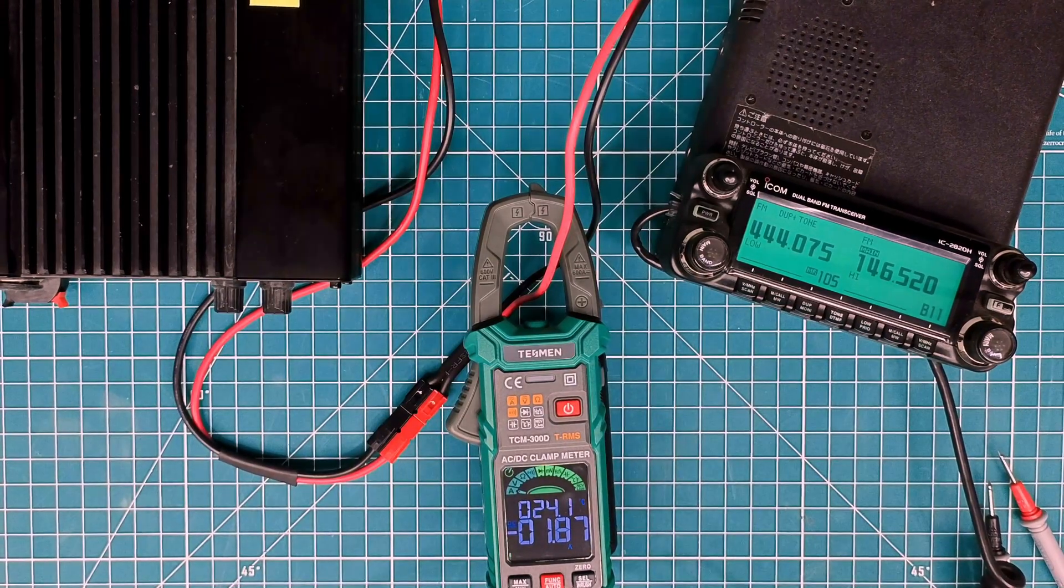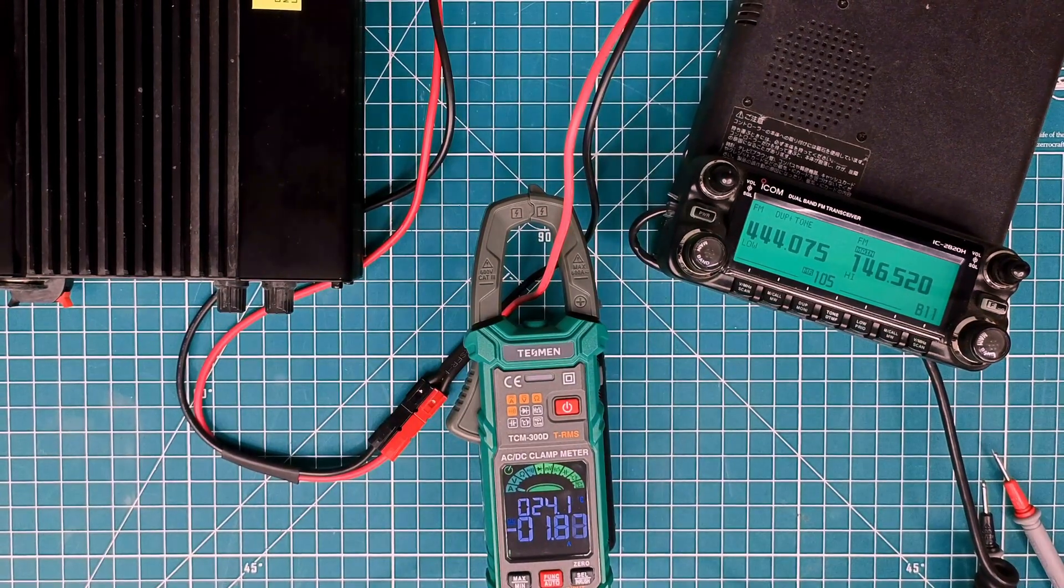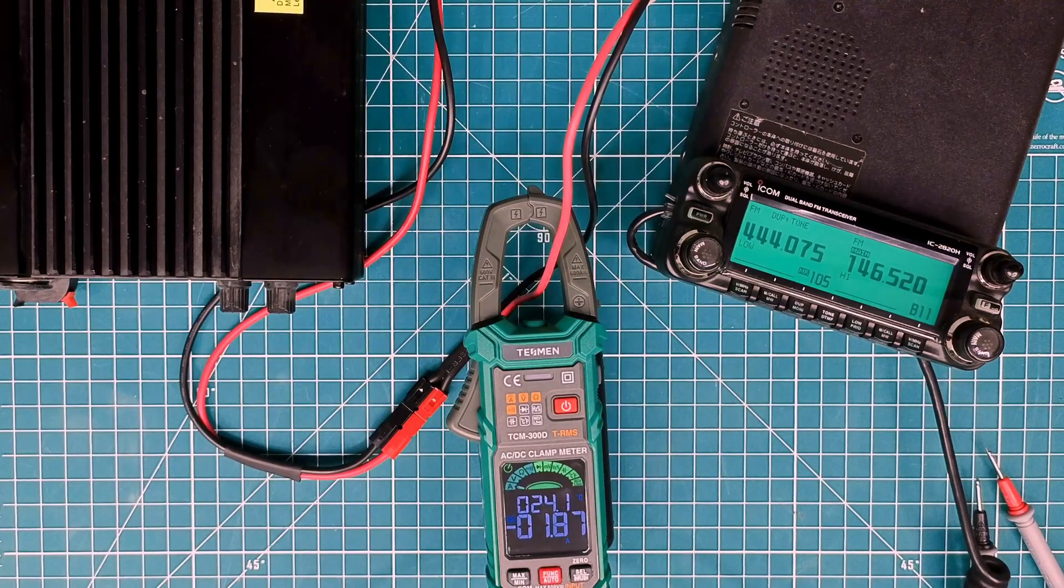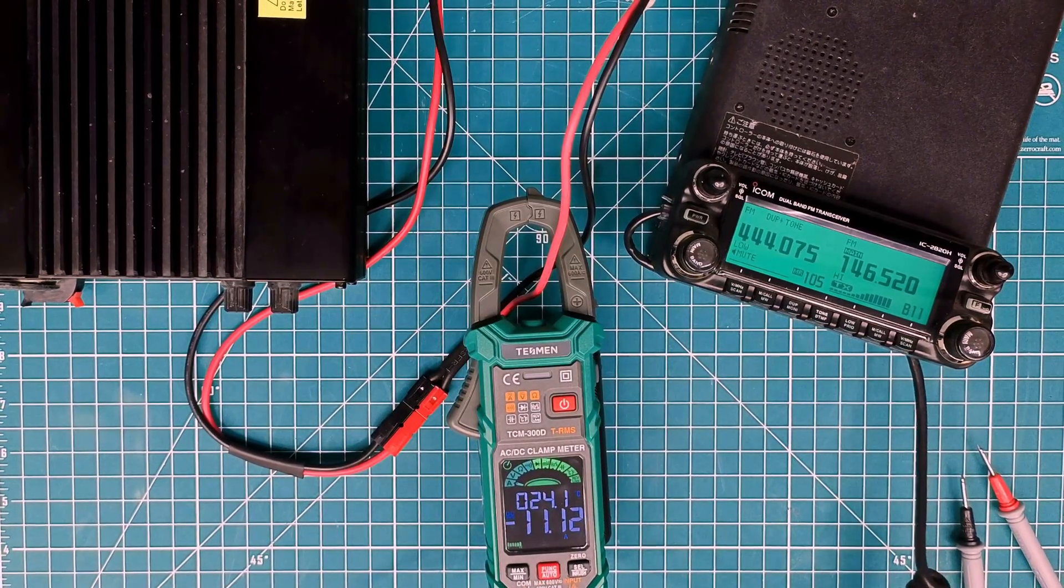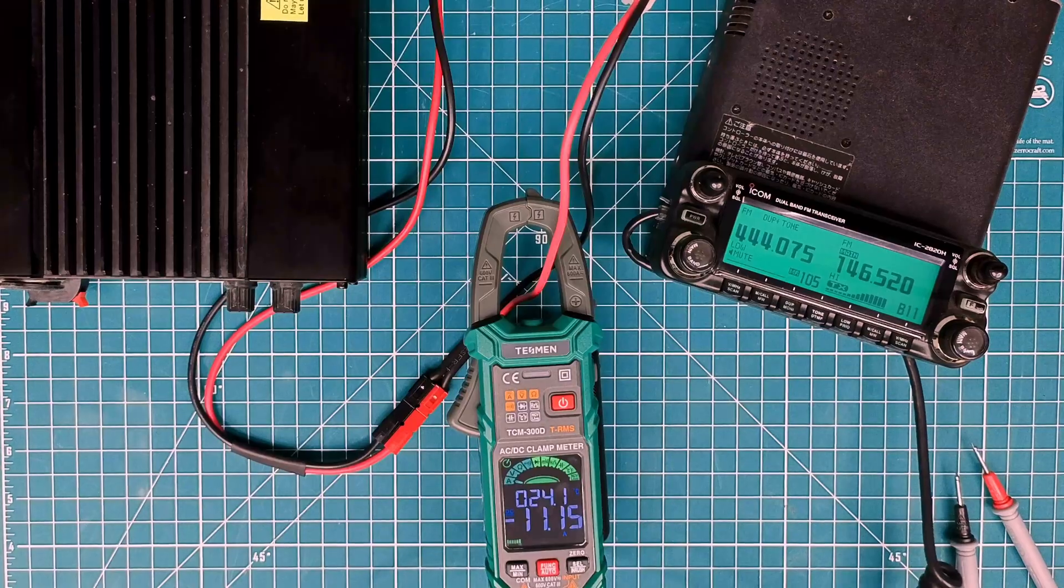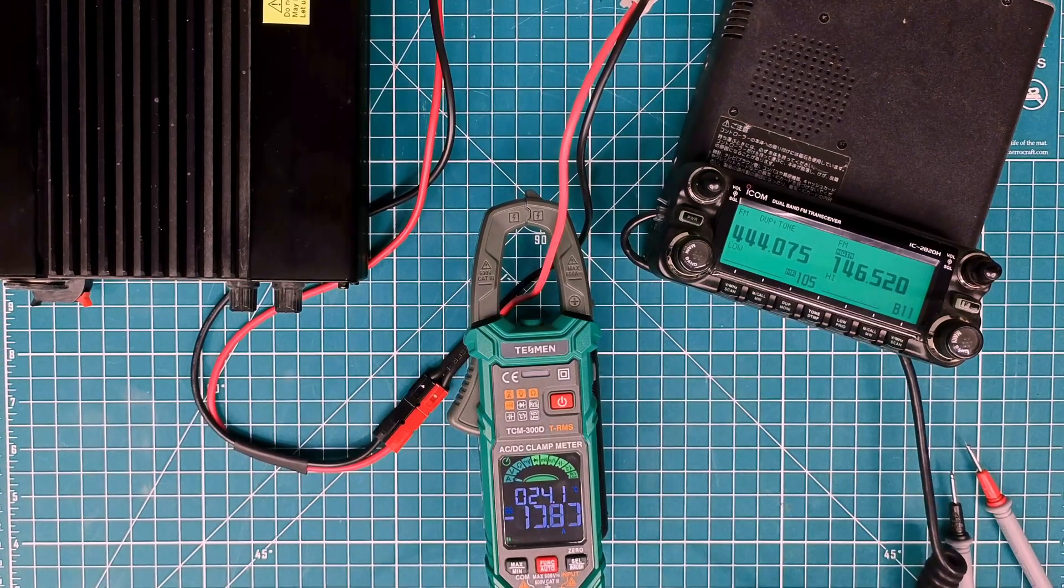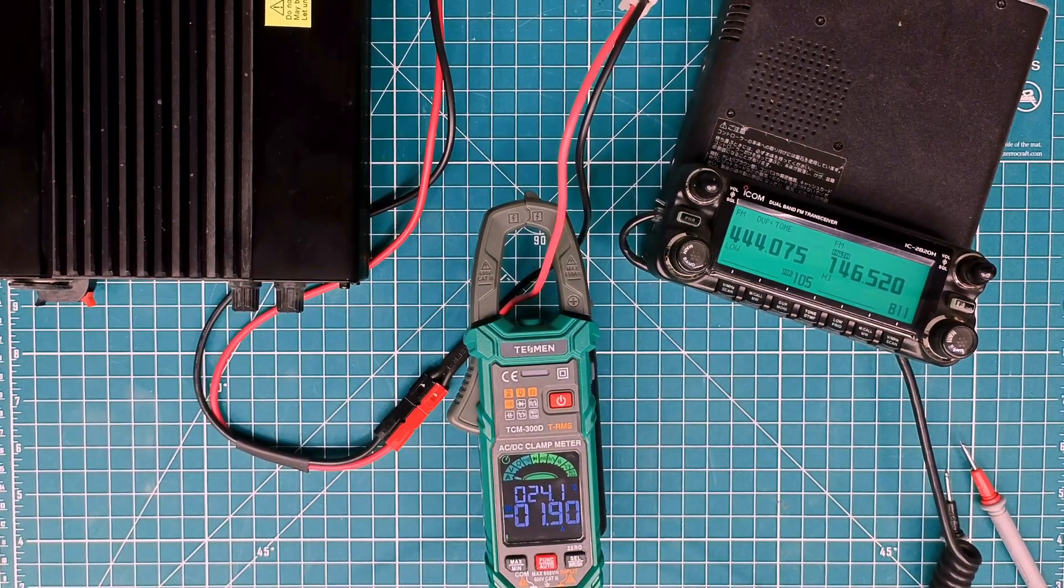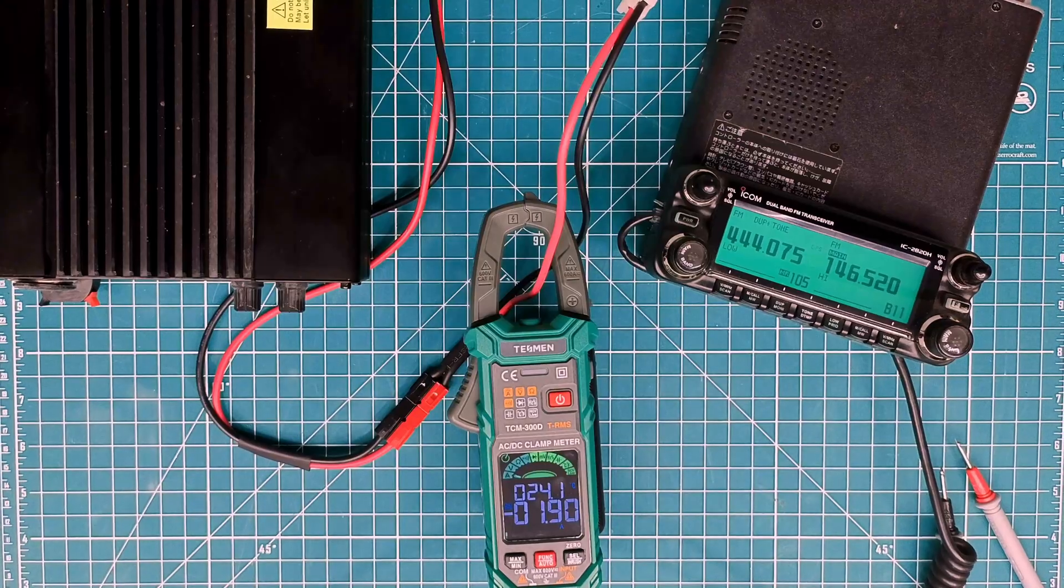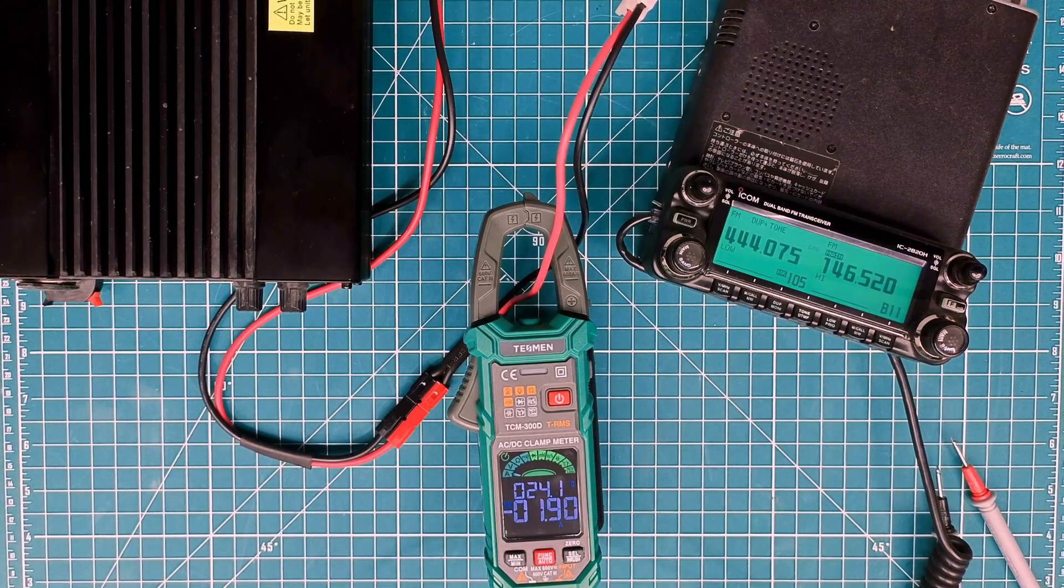This is going to be the most transmitting power, most amount of power transmitted out of the radio. November whiskey nine Foxtrot testing one, two, three, three, two, one. All right. So over 11 amps of current draw from the radio in this scenario.